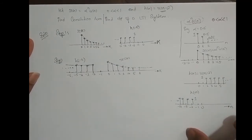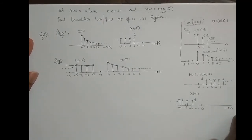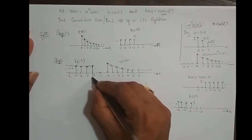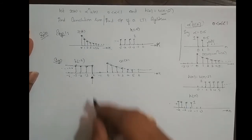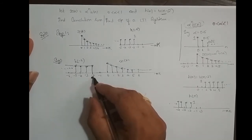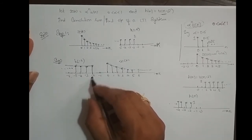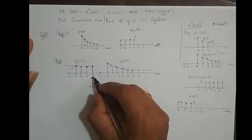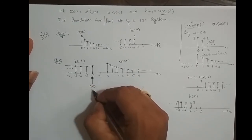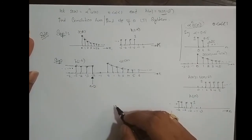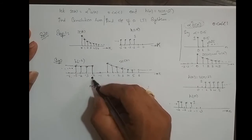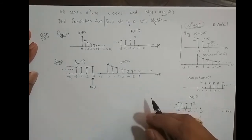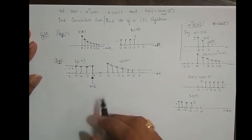Now we assign a controlling index. The slider is at -2, so the controlling index is n-2. If the slider were at -3, the controlling index would be n-3; if at +2, it would be n+2.